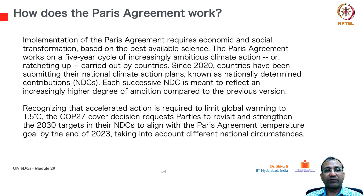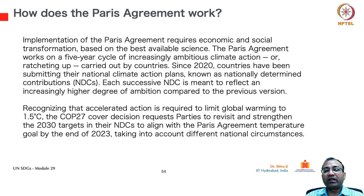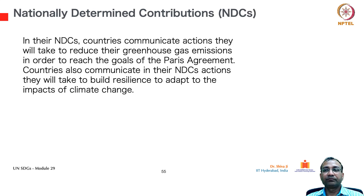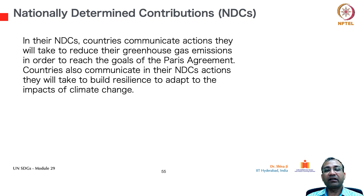Implementation of the Paris Agreement requires economic and social transformation based on the best available science. The Paris Agreement works on a five-year cycle of increasingly ambitious climate action — or ratcheting up — carried out by countries. Since 2020, countries have been submitting their national climate action plans known as Nationally Determined Contributions (NDCs). Each successive NDC is meant to reflect an increasingly higher degree of ambition compared to the previous version. The COP27 cover decision requests parties to revisit and strengthen 2030 targets in their NDCs to align with the Paris Agreement temperature goal by the end of 2023, taking into account different national circumstances. In their NDCs, countries communicate actions they will take to reduce their greenhouse gas emissions in order to reach the goals of the Paris Agreement.